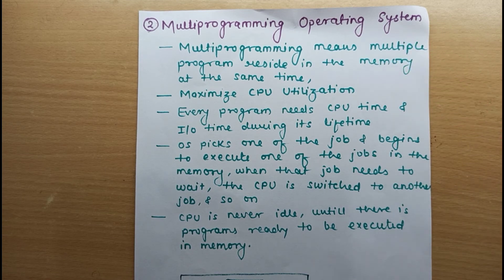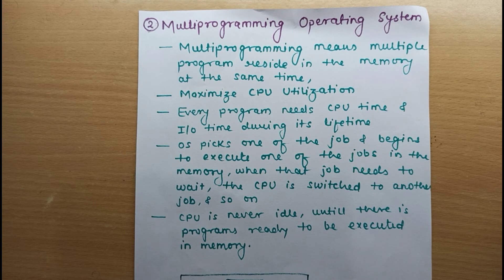What does multiprogramming mean? Multiple programs reside in the main memory at the same time. Before this, there was one job at a time in the memory. The problem with that was: if there is one job in the memory and that job performs any IO operation, the CPU doesn't have any work to do — we are not utilizing our resource properly.